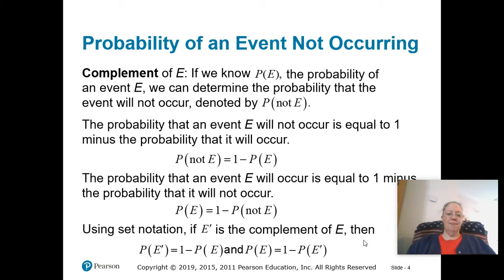This will make more sense when we do an example. The complement of E is everything outside of E. In other words, the probability of an event that does not occur, we're going to take the total probability, which is 1. Remember, the probability all has to add up to 1. Then we're going to subtract the probability that it will occur, and that's the probability it will not occur. Again, this is going to make more sense with an actual example.